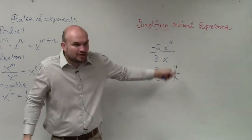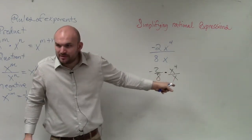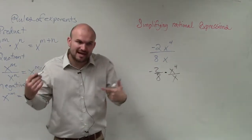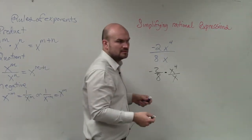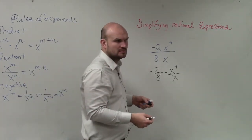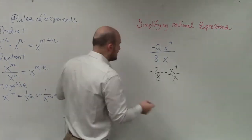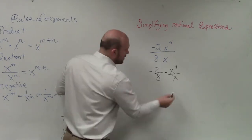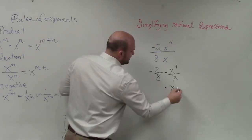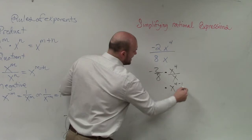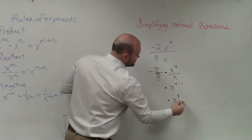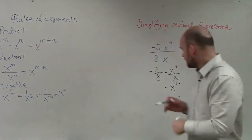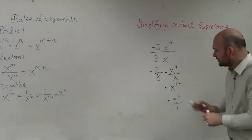Now, this we should all be familiar with. x to the fourth divided by x — we know we're going to subtract the powers. So we know that this would be x to the 4 minus 1, which is x to the third. And it's really x to the third over 1, but we're not going to write that.